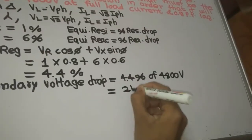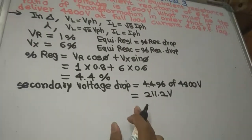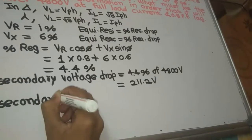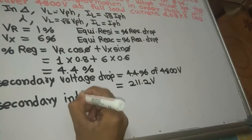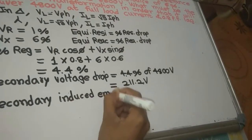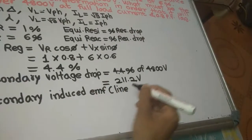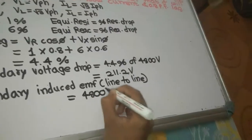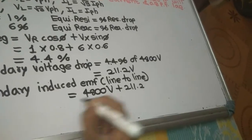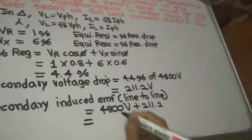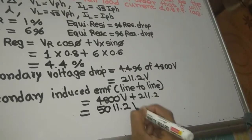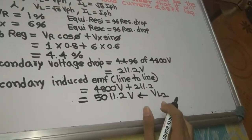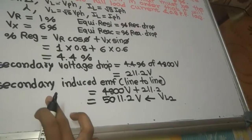4.4% of 4800 volt = 211.2 volt. This is the secondary voltage drop. So secondary induced EMF (line-to-line) = 4800 + 211.2 = 5011.2 volt. This is VL2, the line voltage on the secondary side.